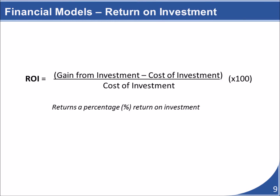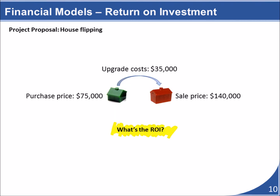Let's look at another formula: the return on investment formula. This formula returns a rate of return as a percentage on an investment — it is the anticipated profit divided by the initial investment. Suppose you were considering earning some extra money doing house flipping, where you buy a rundown house, fix it up, and sell it for hopefully more money than you purchased it for.